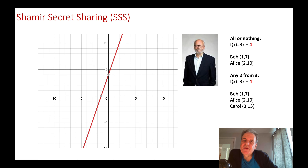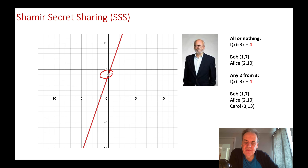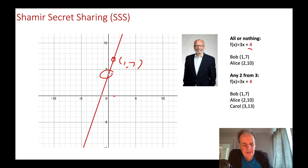The method proposed is to define a polynomial that maps the secret onto it. Only by knowing a certain number of points can you reveal the secret, which is the point where the polynomial cuts the y-axis — when x equals zero. In the simplest case with two shares, the secret is four. We draw a straight line: Bob gets the point at x=1 (value 17) and Alice gets the point at x=2 (value 10), which relates to the line 3x + 4.